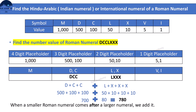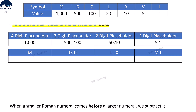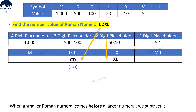Question 2: Find the number value of Roman numeral CDXL. Divide the given Roman numeral and arrange them into the given digit groups. Here, D equals 500, which is larger than C which is 100. When a smaller Roman numeral comes before a larger numeral, we subtract it. Here C came before D, so we subtract them. In the same way, L equals 50, which is larger than X which is 10, and here X came before L, so we subtract them. The total value came as 440. So the number value of Roman numeral CDXL is 440.